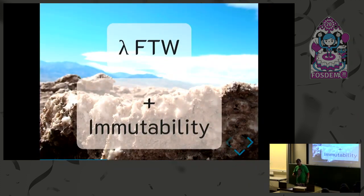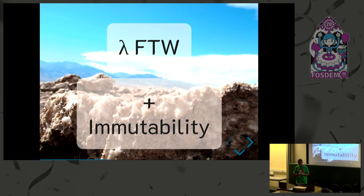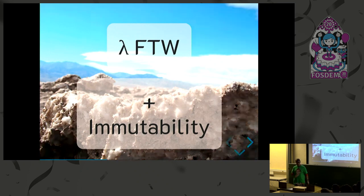Lambdas are so important that even C++ has lambdas now, which is totally amazing. Also, immutability. The two things are kind of related because they are related to functional programming. Lambdas are functions that you can use as data — they are first-class citizens. And immutability means you are going to work with some variables that are not changed, and you are going to do some things with them.